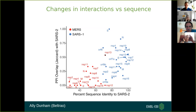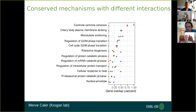Despite changes in specific interactions, sometimes viruses will still interact with the same biological processes. For processes such as nuclear envelope interactions, all three viruses interact with nuclear envelope proteins, but not necessarily through the same proteins. SARS-1, SARS-2, and MERS each have interactions with nuclear envelope proteins but via quite distinct proteins.